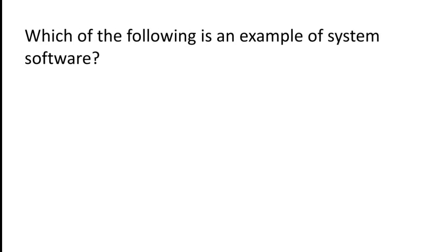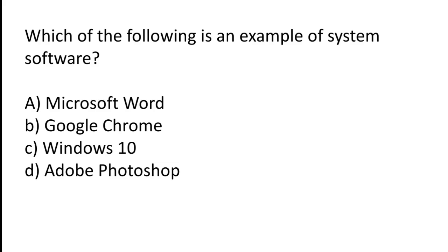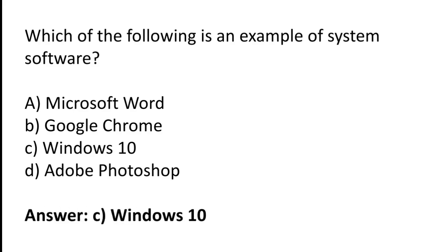Which of the following is an example of system software? Microsoft Word, Google Chrome, Windows 10, Adobe Photoshop. The correct answer is option C — Windows 10 is an example of system software.